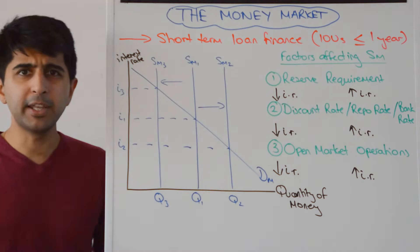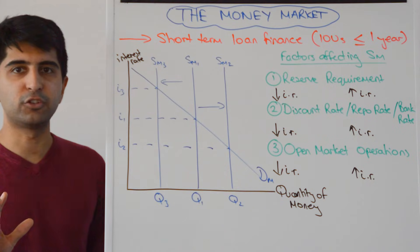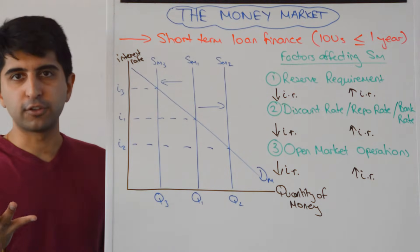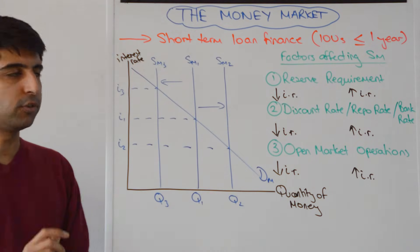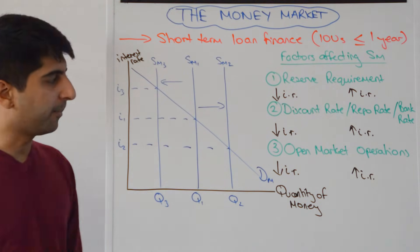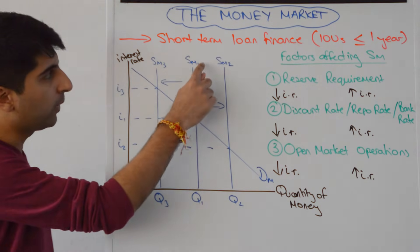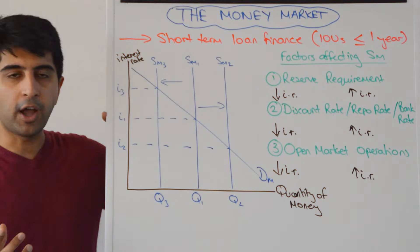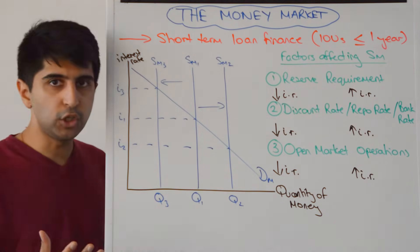The supply of money curve is vertical because the central bank controls it — it's fixed at one quantity value. We know that central banks control the money supply, which is why we draw it vertical and independent of the interest rate. Where the supply of money curve intersects the demand for money curve, we get the equilibrium interest rate in the money market. Where supply curve one hits the demand curve, we get an equilibrium interest rate of I1 and equilibrium quantity of money fixed by the central bank at Q1.